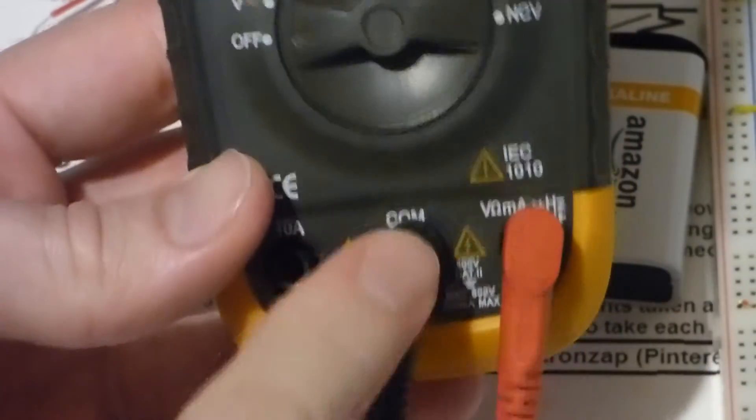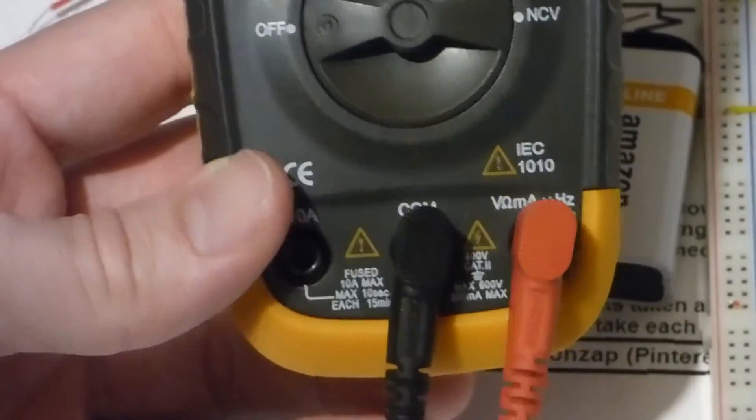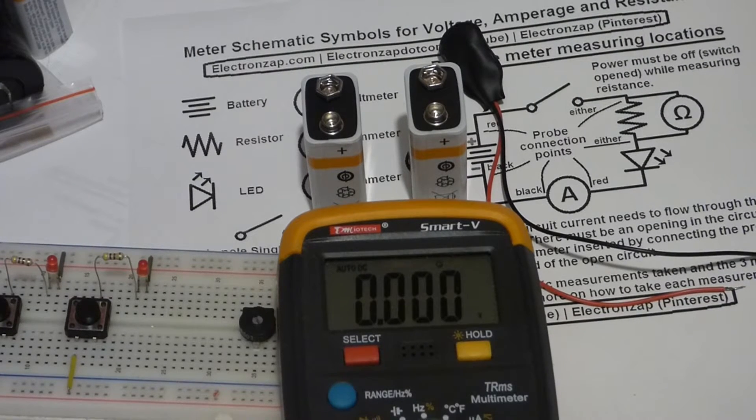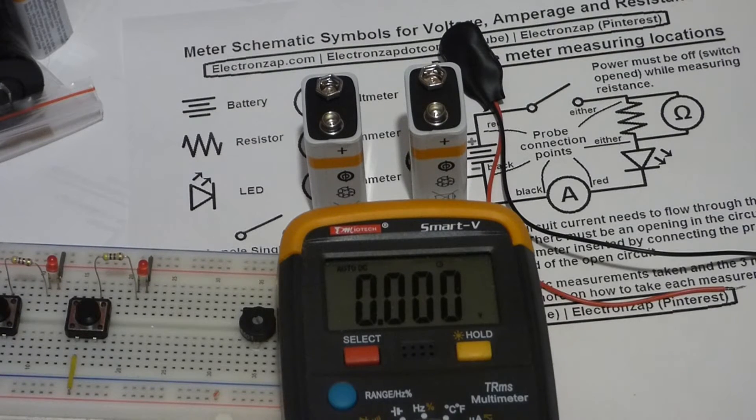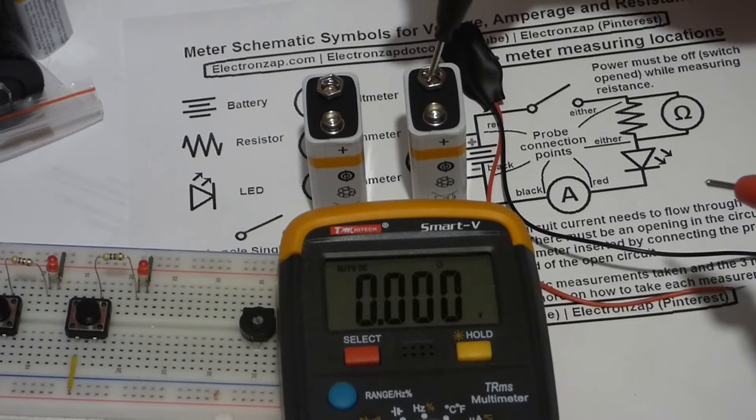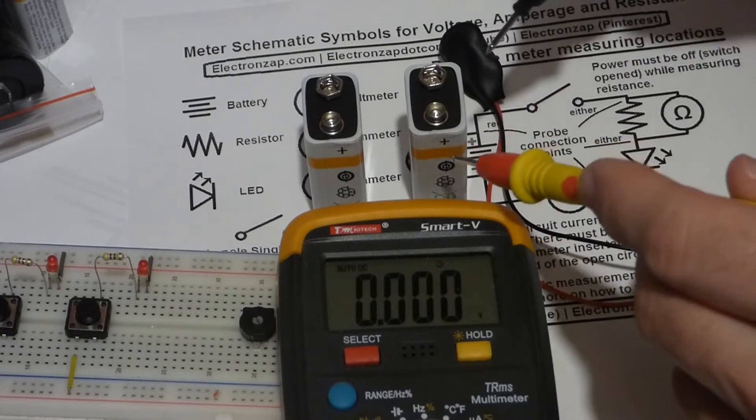So now one of the main uses of the multimeter is checking the power source, in this case the battery. We want to make sure the battery is good, so we want to make the right polarity if possible.